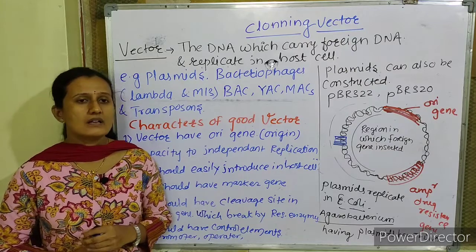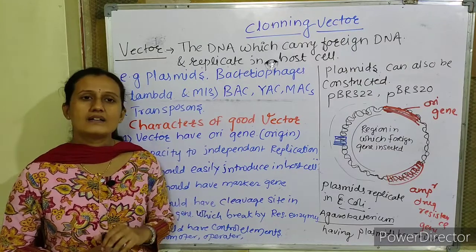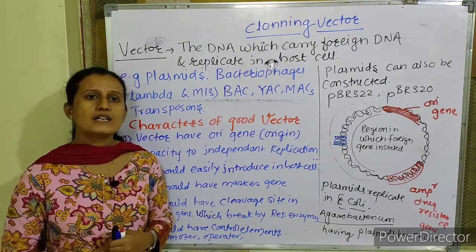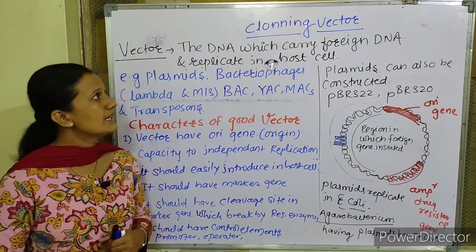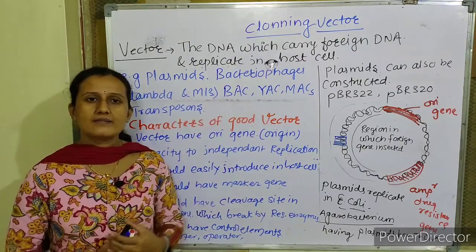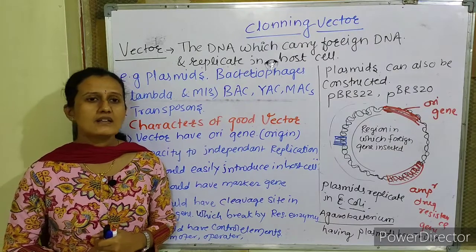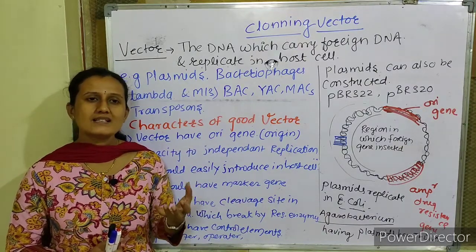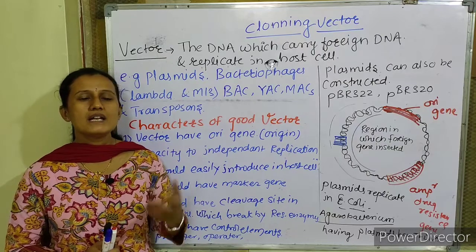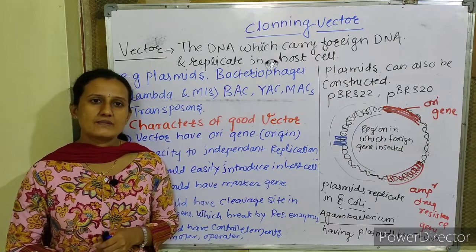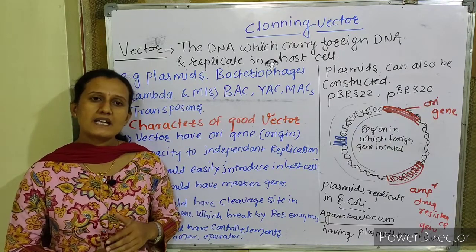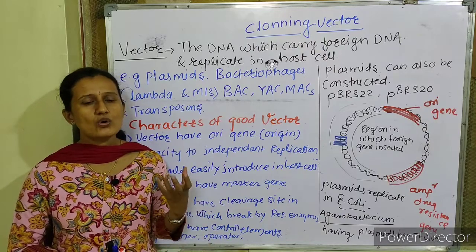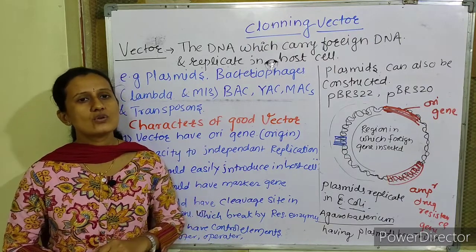The second main factor used in rDNA technology — that is recombinant DNA technology — is the cloning vector. Cloning means the process in which cells are converted into their multiple copies. They are exact replicas of the parent cell. That is called clones, and the process is called cloning.